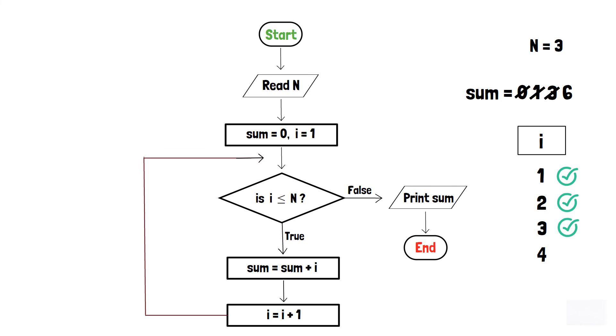At this point, as i is equal to 4, the condition in the decision box becomes false. As a result, our program will print the sum that is 6 and terminates. Thank you.